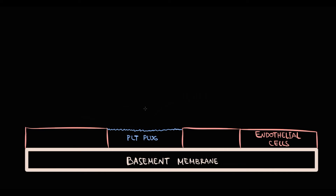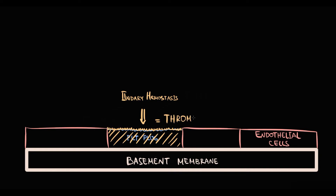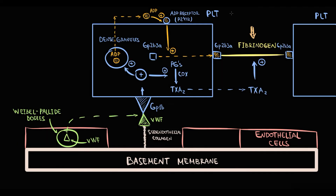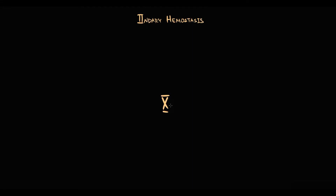The platelet plug is weak, and to stabilize it and make it formidable, we have secondary hemostasis. The function of secondary hemostasis is to convert the weak platelet plug into a formidable structure called a thrombus. The thing that makes this possible is the conversion of unstable fibrinogen into stable fibrin. Secondary hemostasis is provided by coagulation factors that form the coagulation cascade.